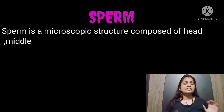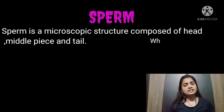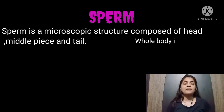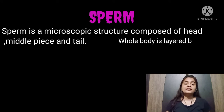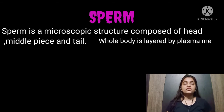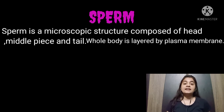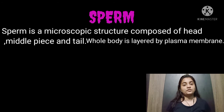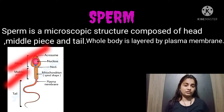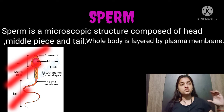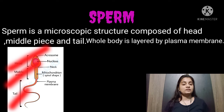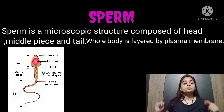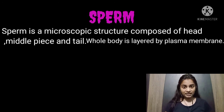Sperm is a microscopic structure — it can't be seen with the naked eye. Sperm is divided into 3 parts: head, middle piece, and tail. In the figure, the upper portion is the head, the middle portion is the middle piece, and then there is the tail. The whole sperm is covered with a plasma membrane.